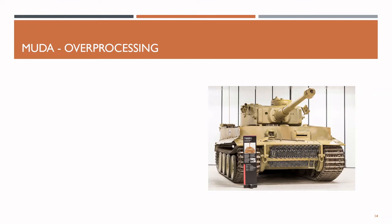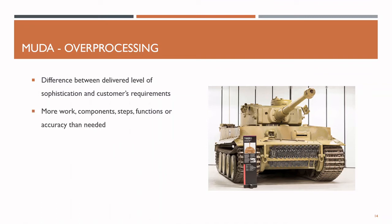The sixth of the eight wastes, overprocessing, can be defined as the difference between the delivered level of sophistication and the customer's requirements. In other words, overprocessing happens when we provide more work, components, steps, functions, or accuracy than actually needed. The customer only requires a certain level of sophistication – everything beyond just leads to higher manufacturing costs and is therefore waste. For example, nobody expects simple writing paper to be cut exact to the thousandth of a millimeter; such tight tolerances would only let production costs skyrocket but add no value to the customer.